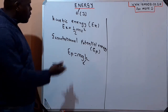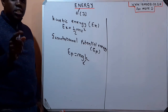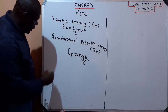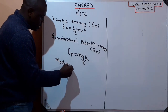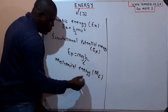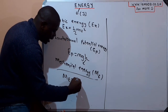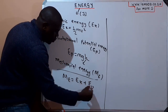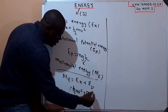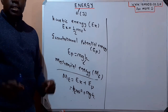If we take the sum of kinetic energy and gravitational potential energy, what we have is mechanical energy. Mechanical energy is just the sum of kinetic energy and gravitational potential energy. We denote it as Me, which equals Ek plus Ep, expanded as half mv squared plus mgh. That is how you calculate mechanical energy — it is the sum of the two.